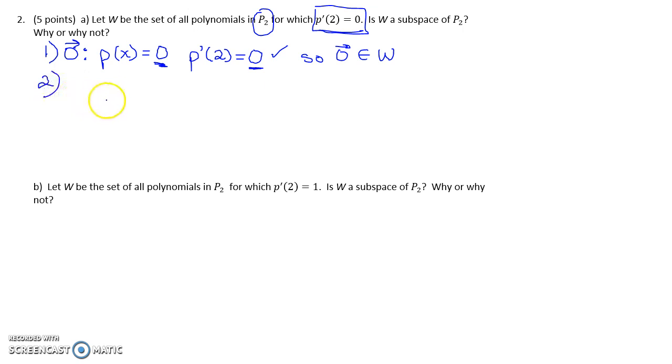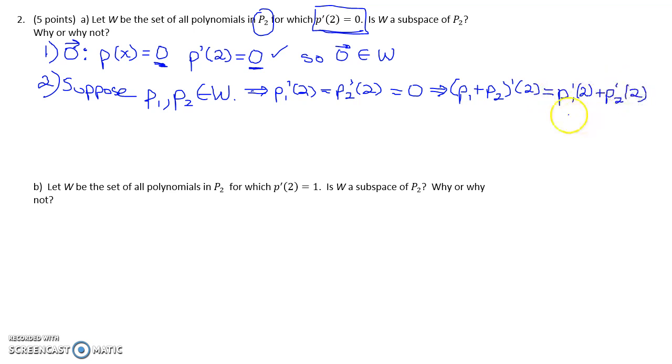Second condition, we need to determine whether it's closed under addition. So suppose P1 and P2 are elements of W. That implies that the derivative of P1 at 2 and the derivative of P2, when we plug in 2, those are both equal to 0. Then if we take the sum of those two polynomials, take the derivative at 2. Well, one of our properties of the derivative of a function is when we take the derivative of a sum, we can take the derivative of each part of that sum individually.